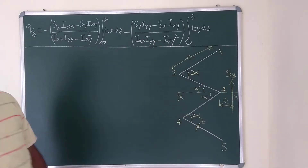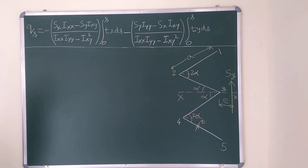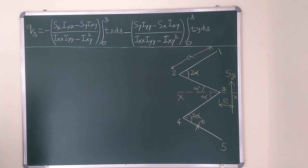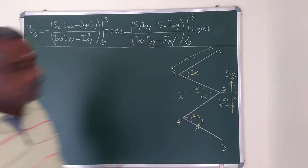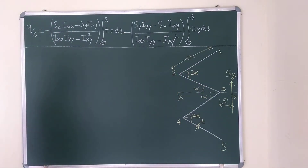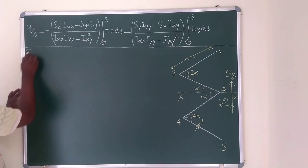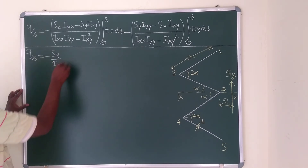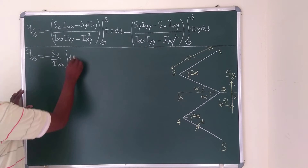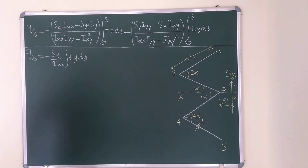The shear center is located at a distance E from point E. The formula to find the shear flow for thin-wall sections: since Ixy is 0 (section is symmetric) and Sx is 0, the expression simplifies to Q(s) = −(Sy / Ixx) ∫ T·y·ds.